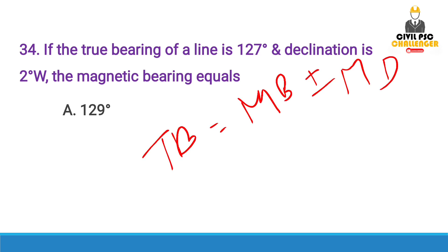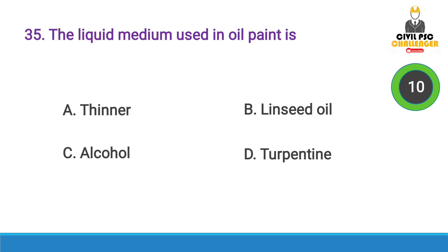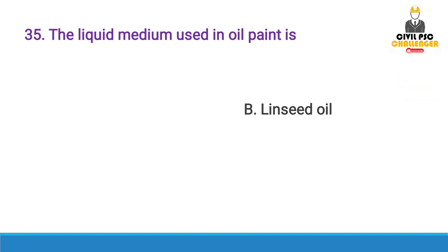Declination East uses a positive sign; declination West uses a negative sign. Next question: The liquid medium used in oil paint is — Answer option B, Linseed Oil.